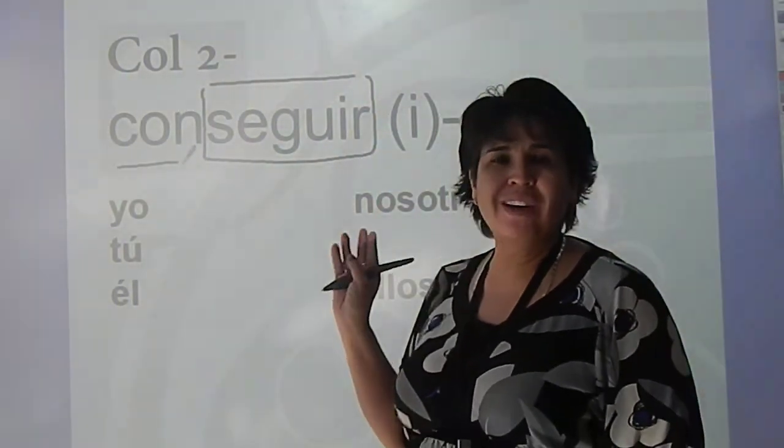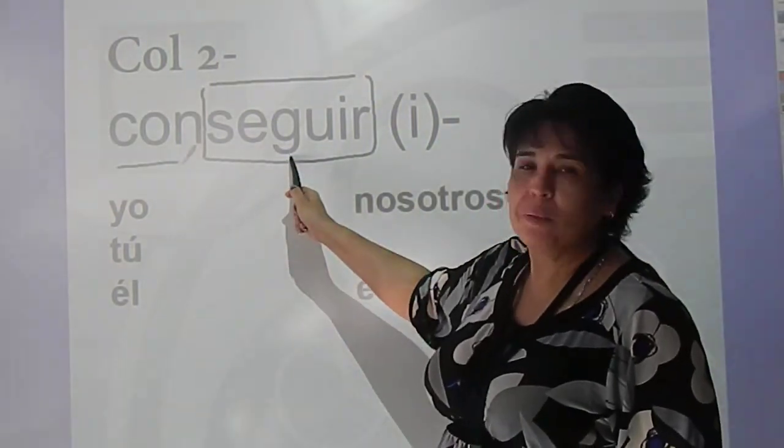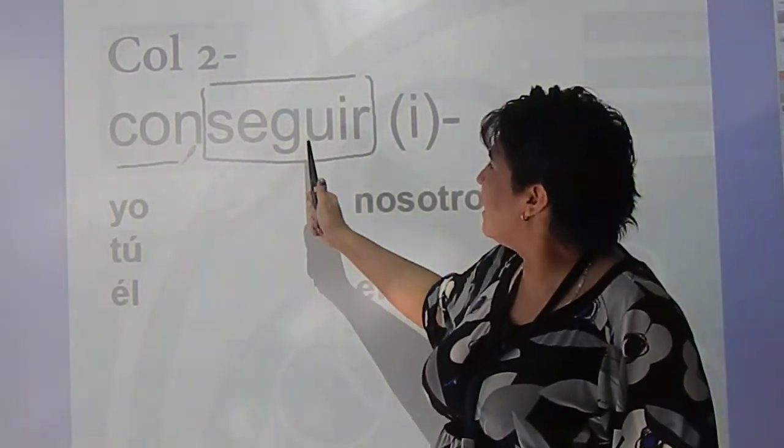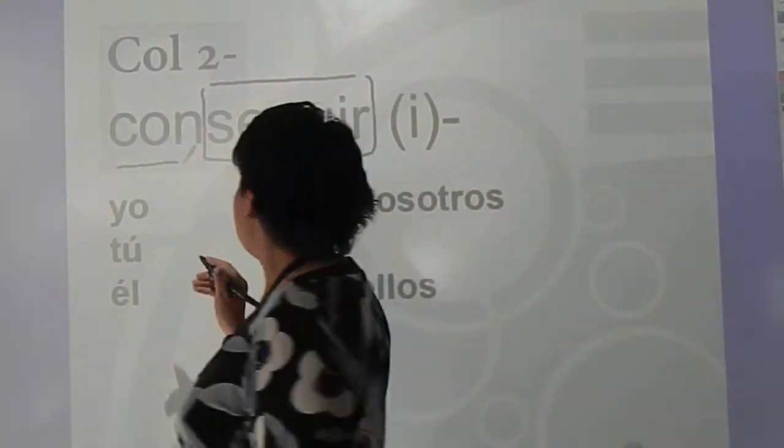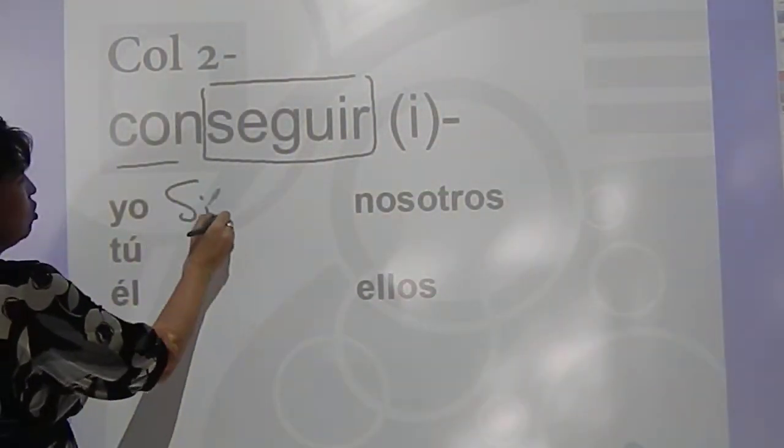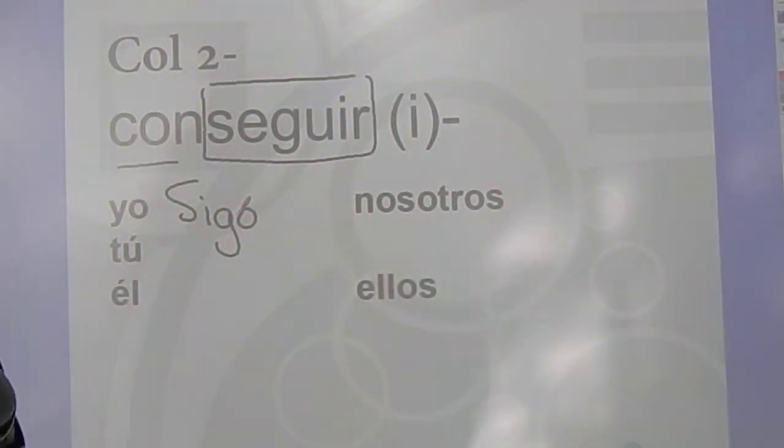Conseguir is actually a compound of the verb seguir. Seguir has two irregularities. First off, seguir is a go-go. So seguir is sigo.